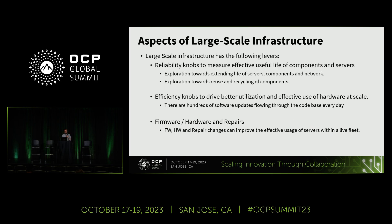And that's what we want to address. In a large-scale infrastructure, you have reliability knobs to measure effective useful life of components and servers. If you follow the earnings reports from a majority of hyperscalers, you will see that a bunch of them have actually extended the useful life of servers. A number of hyperscalers also have dedicated initiatives around reusing and recycling components. There's generally a lot of exploration around using reliability as a guidance factor to extend the life of components. You also have a bunch of efficiency knobs used to drive better utilization and effective use of hardware at scale — based on software updates, compiler updates, firmware updates, and hardware repairs.